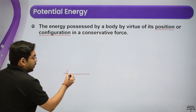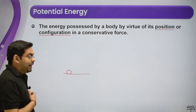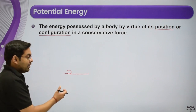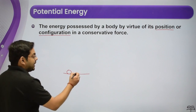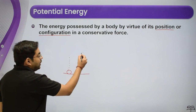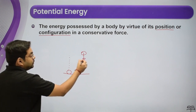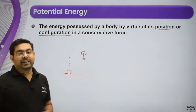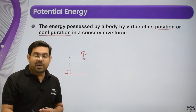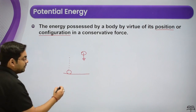Suppose there is a ball placed on the ground. It will not move automatically because it has no potential energy right now. But if we move it upward to some height and release it, it can now move on its own towards the ground. This ability to move by itself — this is what potential energy is.